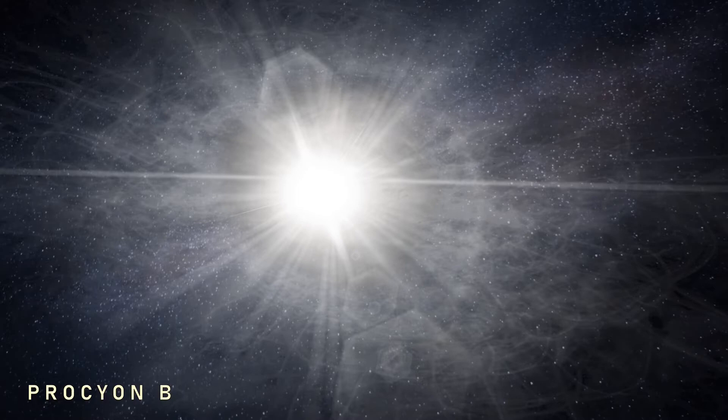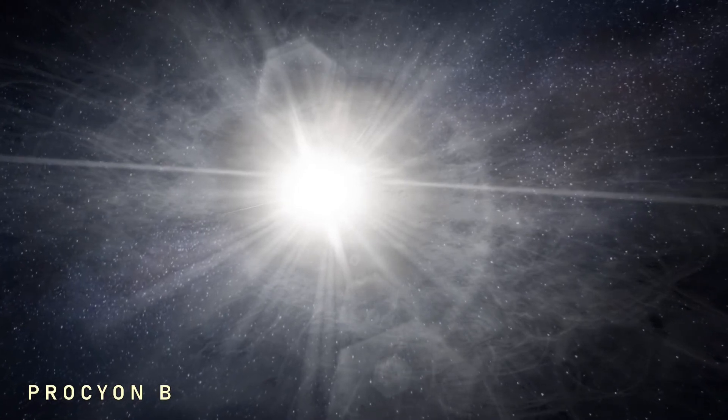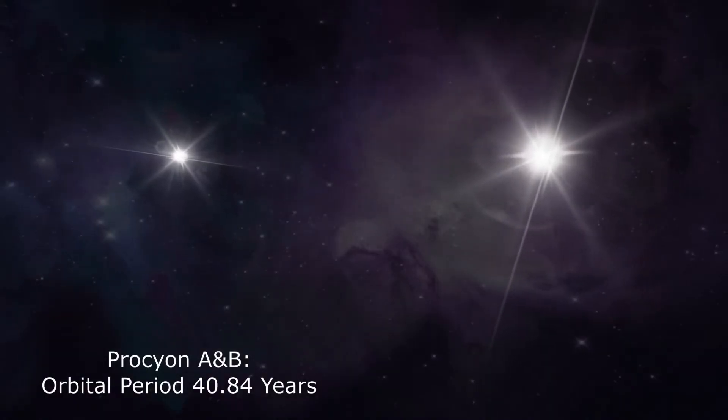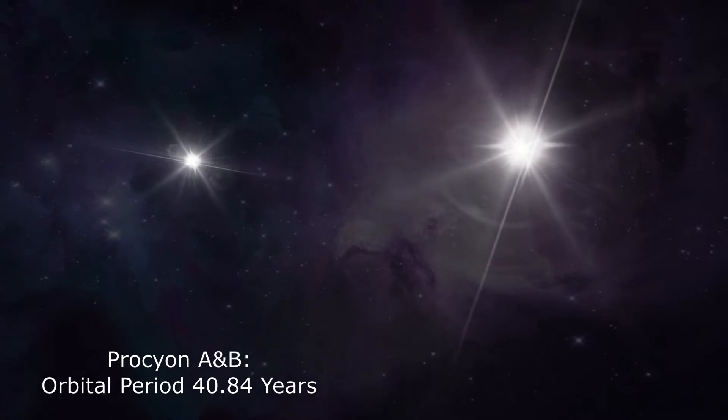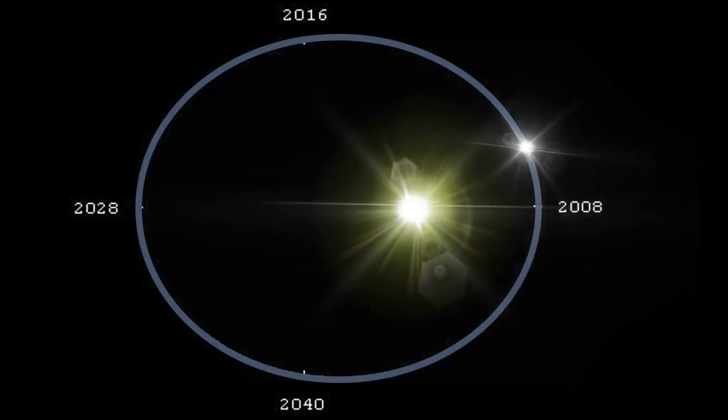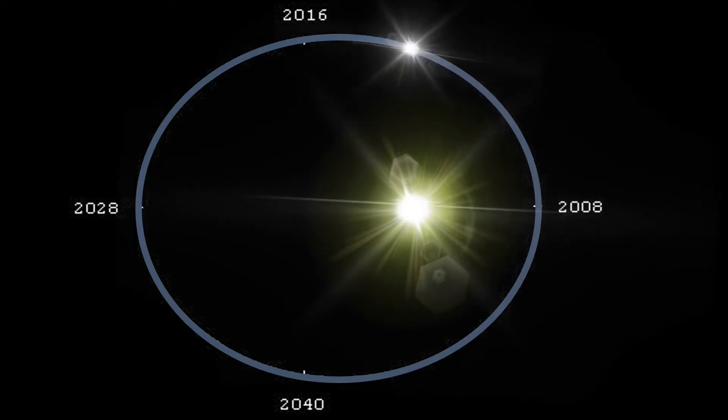Procyon A as you may know has a faint companion, Procyon B. It's not visible to the naked eye though with an apparent magnitude of over 10. The pair orbit each other with a period of 40.84 years along a very elliptical orbit with an eccentricity of 0.4, which is indeed even more eccentric than Mercury's in our own system.